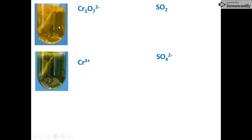Consider this reaction: we have dichromate and bubble sulfur dioxide through, and it turns greeny-blue because we get these two particular products. Let's look at the oxidation number of the elements in each case. Oxygen in all three compounds is in a compound or polyatomic ion, so it'll always be minus two from rule two. We need to apply rules five and six to work out the oxidation numbers of chromium and sulfur.